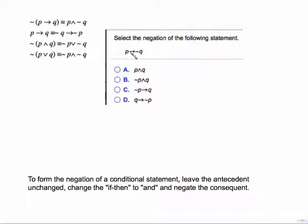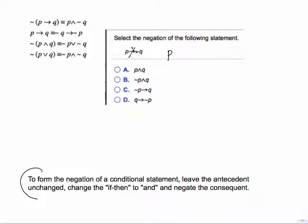This one starts in symbolic form: P → ¬Q. Leave the antecedent unchanged — that's P. Drop the if-then and replace with AND. Negate the consequent — the consequent is already negated, so negating a negation brings it back to Q. So this is simply P and Q.